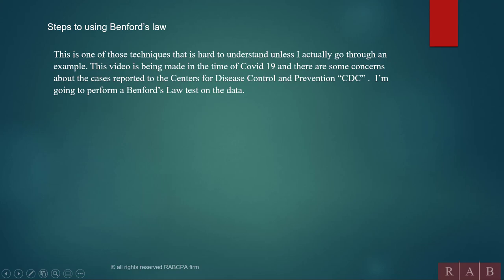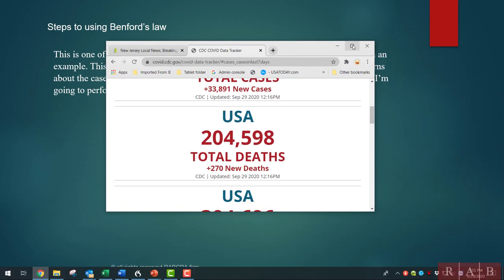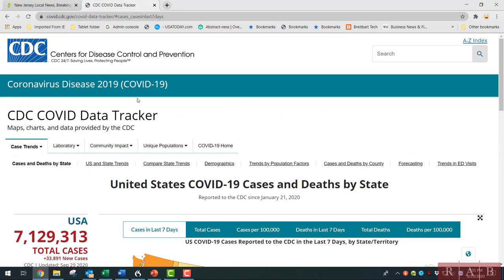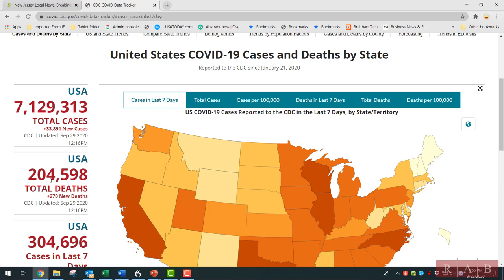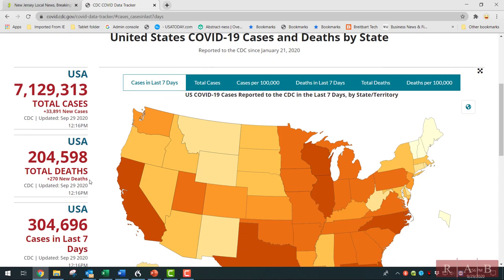Now, here is the website for Center for Disease Control and Prevention, and here they're talking about the deaths, USA. I mean, this disease is horrible. But total cases, new cases, the USA deaths over 200,000. And so what I'm going to do is I'm going to download the cases the last seven days by territory. I'm going to download this data here. Let's see what this looks like.